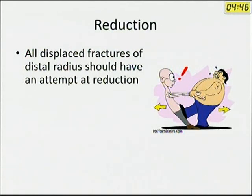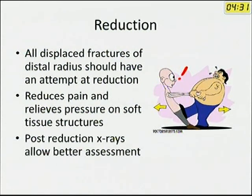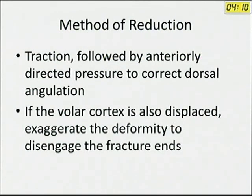Reduction should be attempted in all patients, even those who will need surgery, as it reduces pain and relieves pressure on soft tissue structures. After reduction, the X-ray assessment of fracture geometry is also much better. The method of reduction is by traction, followed by anterior-directed pressure to correct dorsal angulation. If the volar cortex is also displaced, the deformity has to be exaggerated to unlock the fracture fragments. Once the fracture is reduced, a check X-ray is taken and reduction is assessed.